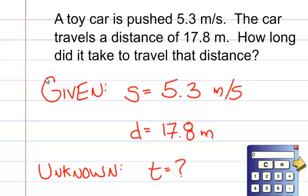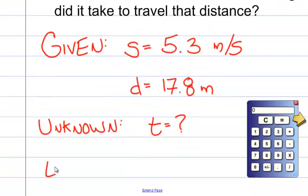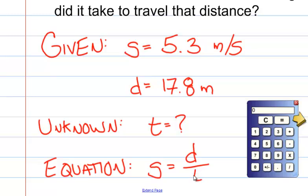Next part of the guess method, G-U, is E. We need to write down what is the proper equation to use. In this case, we'll note that we're looking for speed, distance, and time. We're trying to find time. The equation that we know is speed equals distance divided by time.